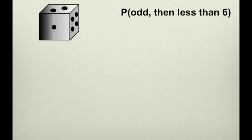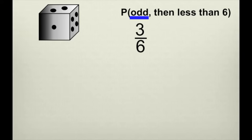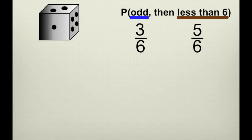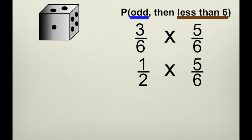Here we have two events: the probability of landing on an odd number for the first roll, and a number less than six for the second roll. There are three odd numbers — one, three, and five — so that's three out of six. For numbers less than six, there are five: one, two, three, four, and five — so that's five out of six. We can reduce three-sixths to one-half. One-half times five-sixths gives us five-twelfths.